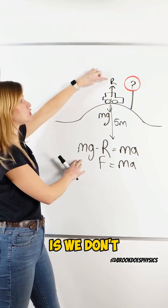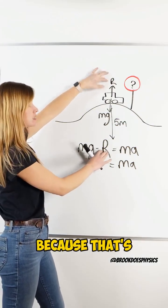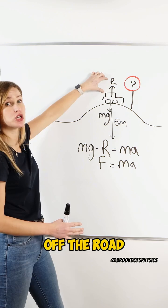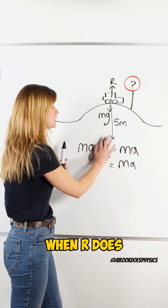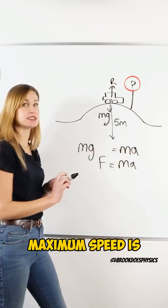So what we want is we don't want the reaction force to go to zero because that's when the car will come off the road or lose contact with the road. So we're going to model it for when r does equal zero so we can see what that maximum speed is.